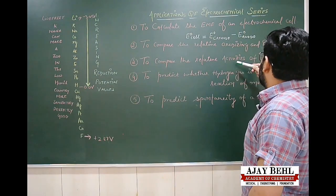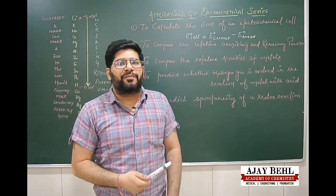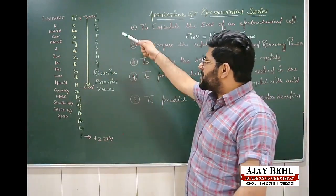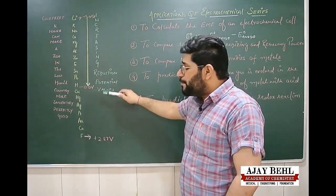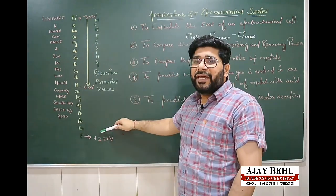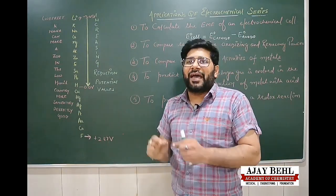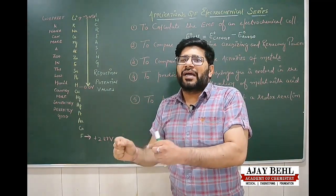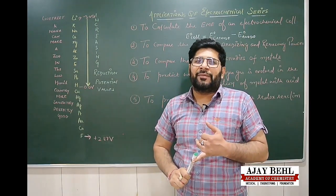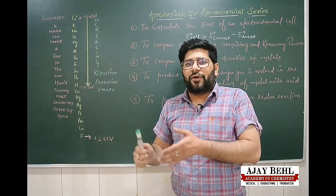The third application is to compare the relative activities of metals. We compare metal activity by comparing their oxidation potentials. The oxidation potential values are higher at the top of the series and lower at the bottom. Greater the oxidation potential of an element, the easier it is for that element to displace the metal atom from a compound.